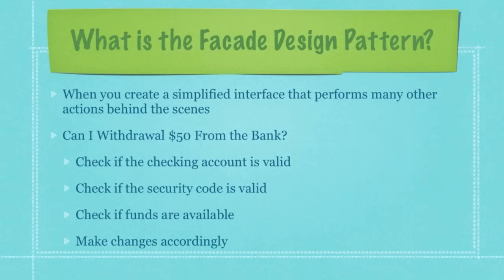Here is a perfect example. Let's say you want to simply be able to say, can I withdraw $50 from the bank? You would then expect the person to check if your checking account number is correct, check if your security code is correct, check if those funds are available, and then make changes accordingly — give you the $50, and subtract $50 from your current account. All of that would happen quite seamlessly. That is how you would implement it using the facade design pattern. Let's get right into the code.